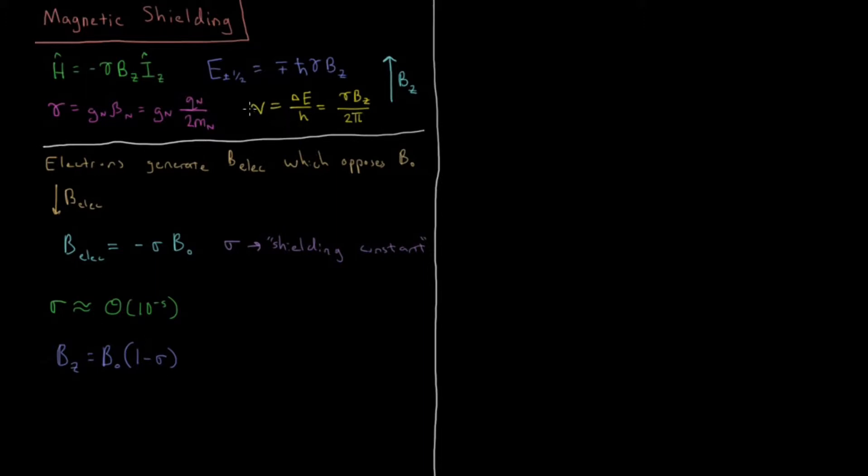Now our frequency here in the absence of any shielding was equal to gamma BZ over 2pi but our BZ has slightly decreased here. So what we're going to see is that the value of B-naught is equal to, if we solve for BZ and rearrange the formula for B-naught, we have B-naught is 2pi nu over gamma times 1 minus sigma.